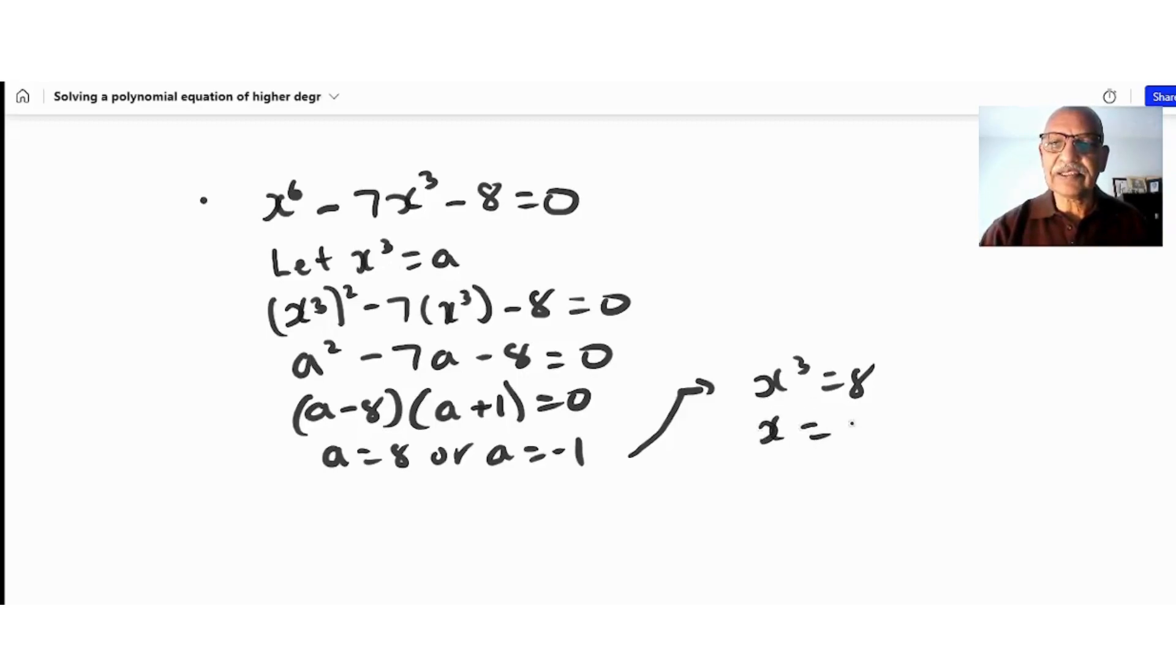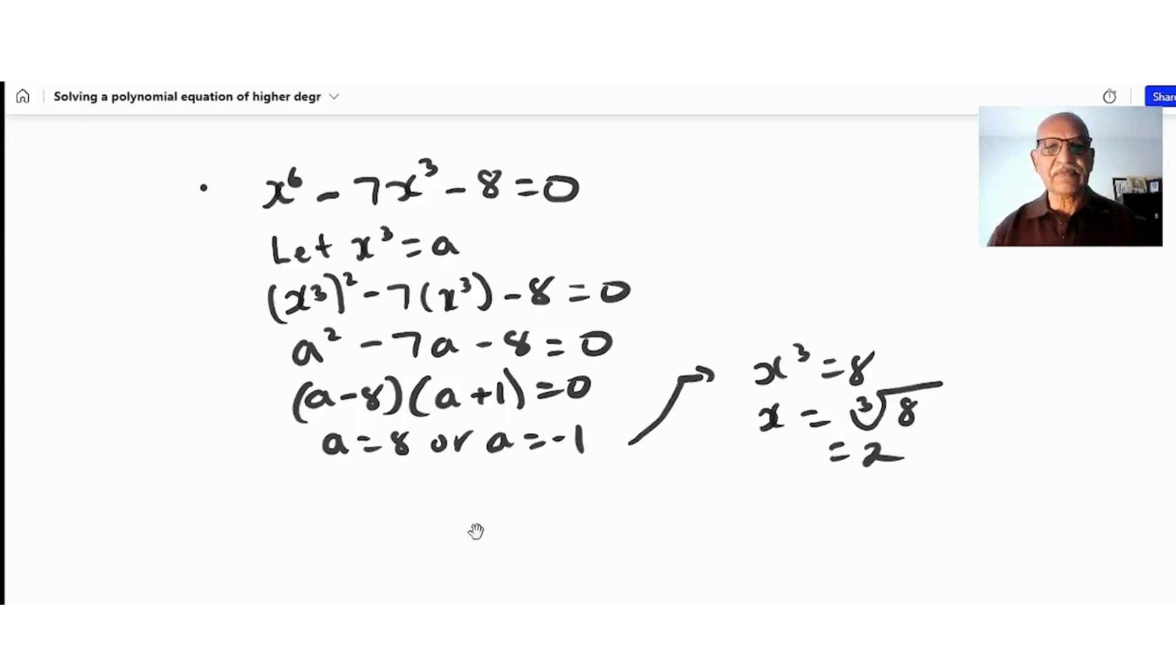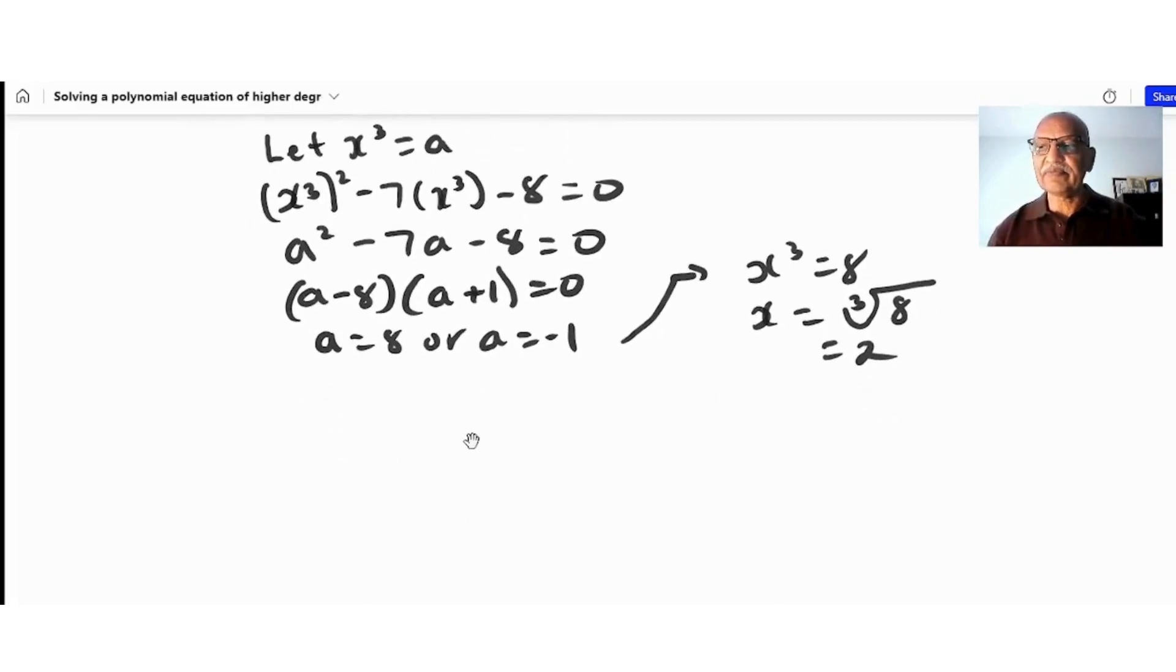And the second solution: x^3 = -1, so x equals the cube root of -1.